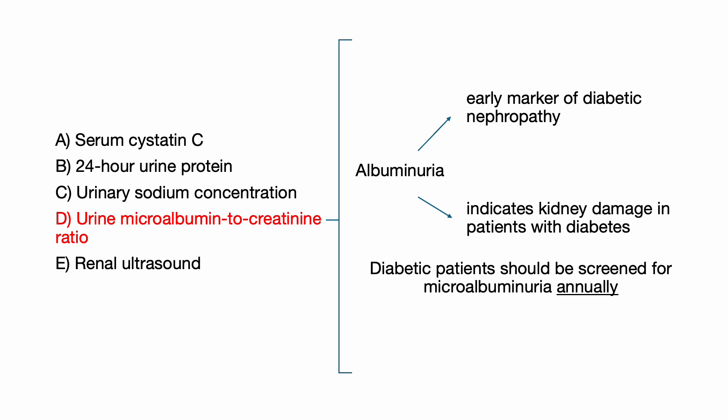Albuminuria is an early marker of diabetic nephropathy and indicates kidney damage in patients with diabetes. Microalbuminuria, defined as albumin in the urine between 30 to 300 mg per day, is a sensitive indicator that precedes the development of overt proteinuria. Diabetic patients should be screened for microalbuminuria annually. This patient's trace protein on a urine dipstick suggests the need for a more sensitive test to detect albuminuria, such as the urine microalbumin to creatinine ratio. Early detection and treatment of albuminuria can slow the progression of diabetic nephropathy.